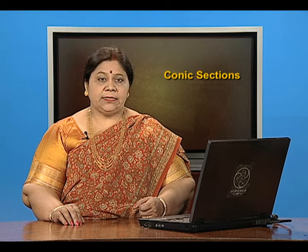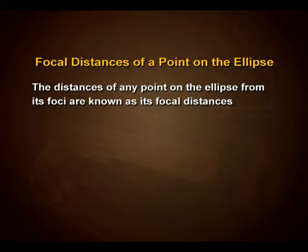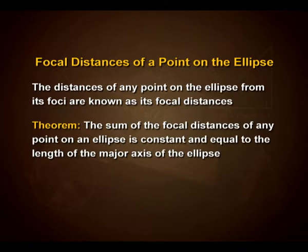Now let us discuss about the focal distances of a point on the ellipse. The distances of any point on the ellipse from its foci are known as its focal distances. We have a theorem related to it which says the sum of the focal distances of any point on an ellipse is constant and equal to the length of the major axis.